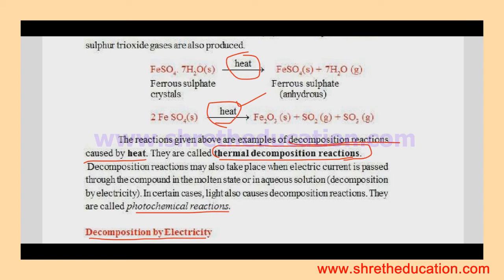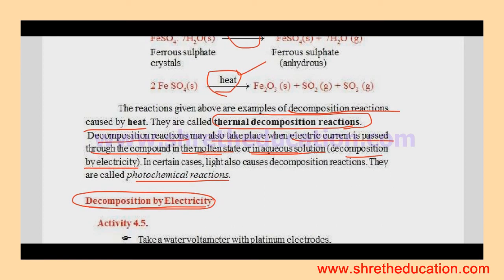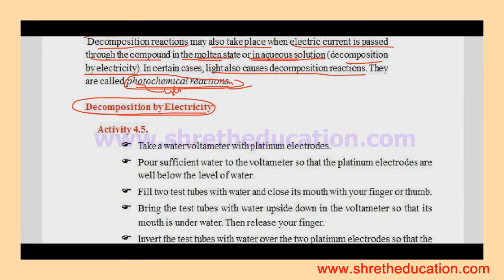Decomposition reactions may also take place when electric current is passed through the compound in molten state or in aqueous solution. Light also causes decomposition reactions. When light causes decomposition, we call it photochemical reaction. Photo means light, so photochemical reactions occur by using light.